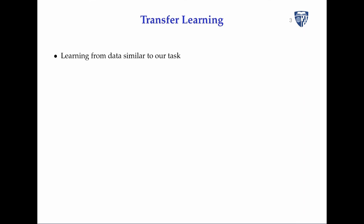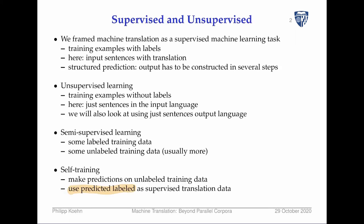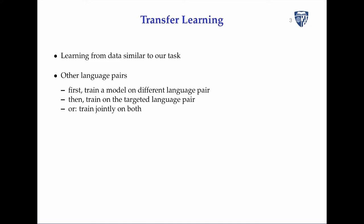Another important term is transfer learning. The idea is to learn from data that is similar to the task we're actually targeting. This might be other language pairs — for example, first training a model on French-English and then training a model on German-English, which is what you ultimately want. You could do this in stages or train jointly on both language pairs.